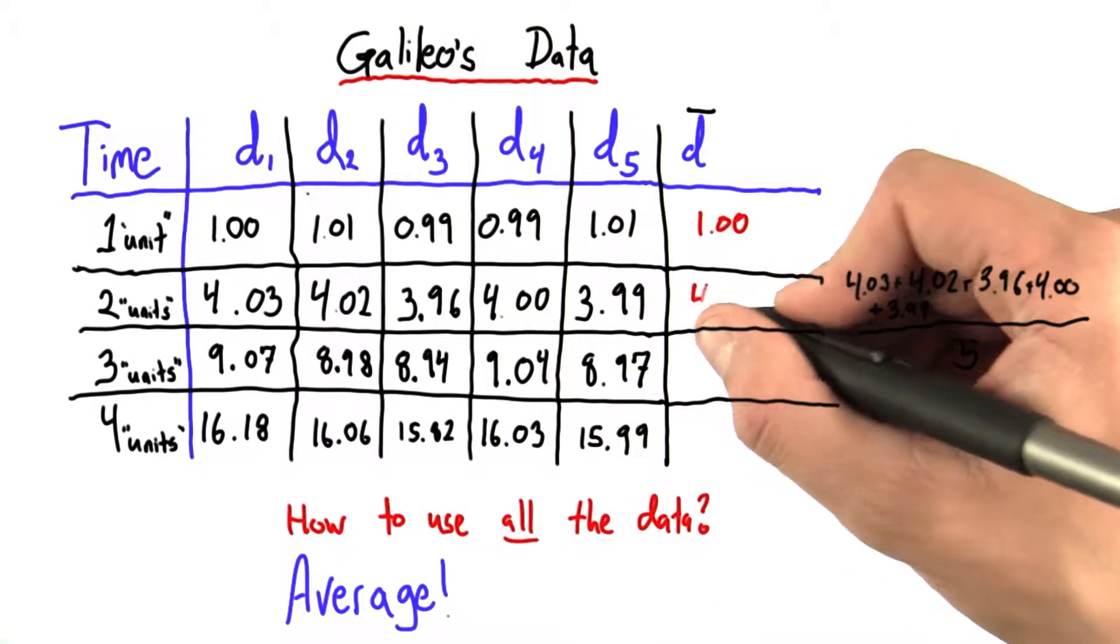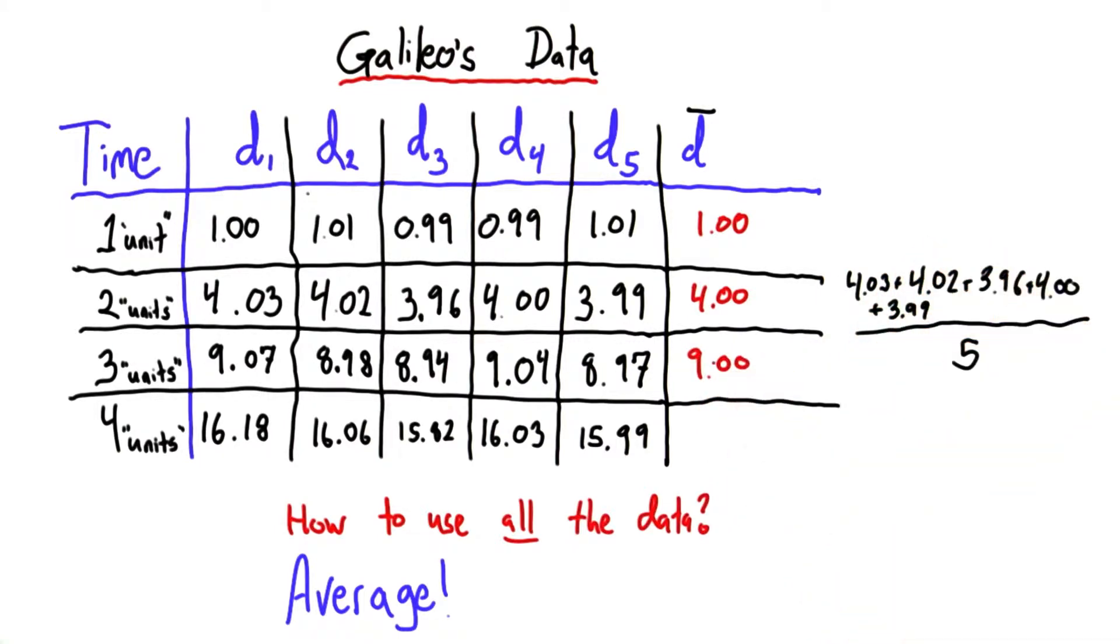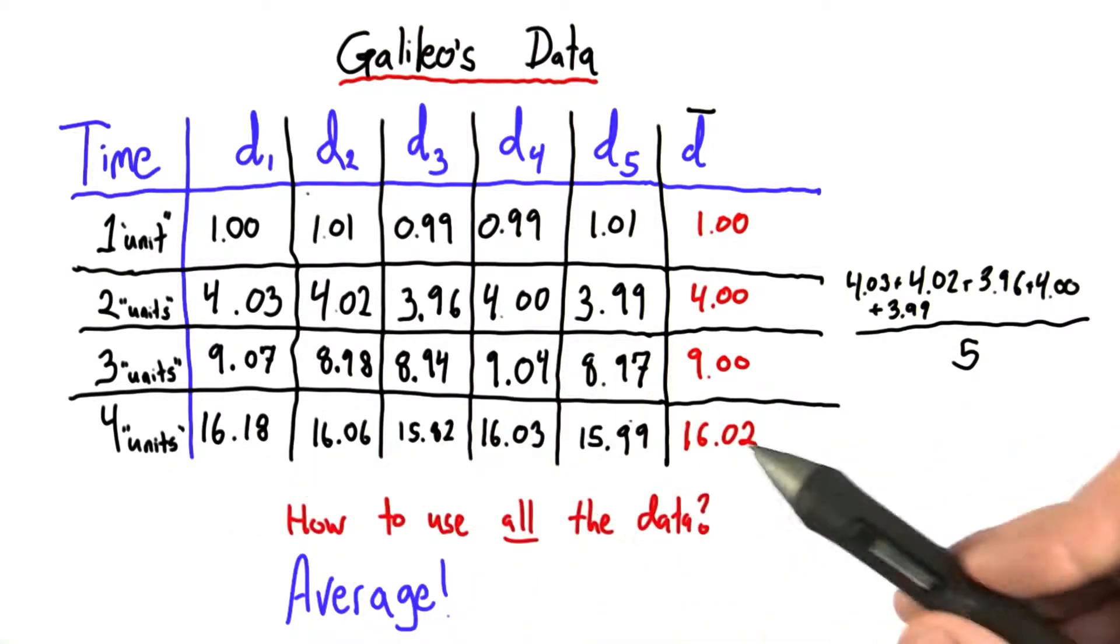and that gave me a result of 4.00 here, 9.00 here, and 16.02, or I've rounded here, for this last one.